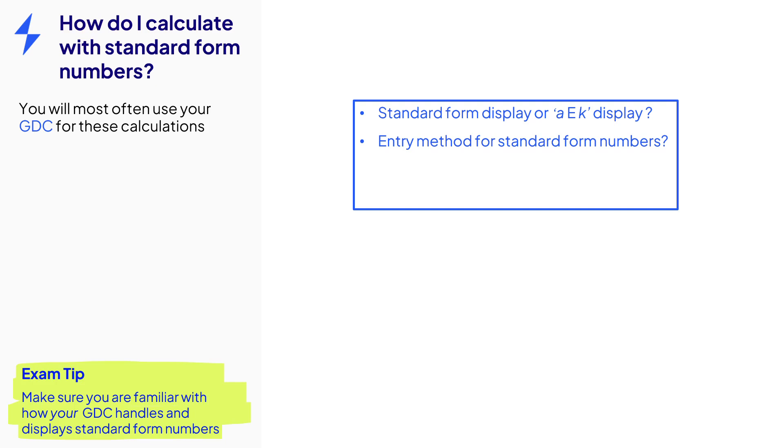Now what's the entry method for standard form numbers? Some calculators will have an EE button that looks a bit like this. Some might have a times 10 to the power of X button that looks like this. So if you were entering the number 2 times 10 to the power of 9, you might hit the key for 2, then the EE key, then the 9 key. Or if you had a different calculator, it might be the 2, the times 10 to the power of X key, and then the 9 key.